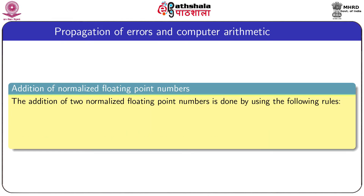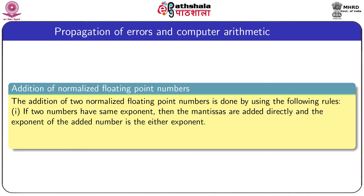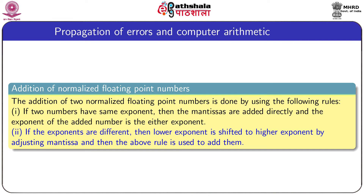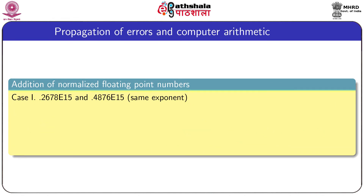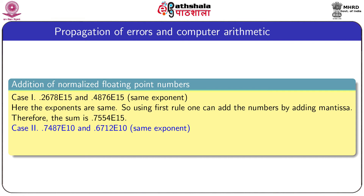For addition of normalized floating point numbers, there are two major steps. If two numbers have the same exponent, the mantissas are added directly and the exponent of the result is either exponent. In case 1, two numbers with the same exponent 10¹⁵ are added — since exponents are the same, the mantissas are added directly, giving a sum of 0.7554 e15.